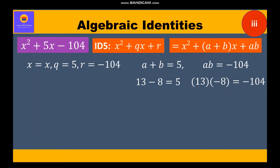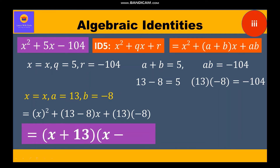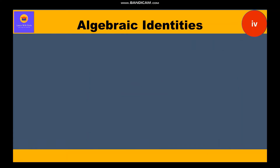So a = 13 and b = -8. Substituting these values into identity 5, we get (x + 13 + (-8))·x + (13)(-8), giving the two factors as (x + 13)(x - 8).